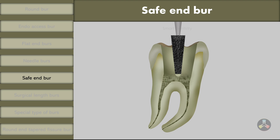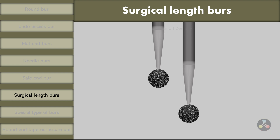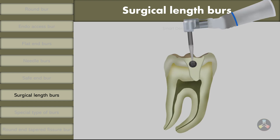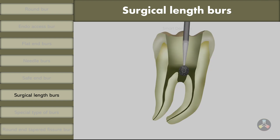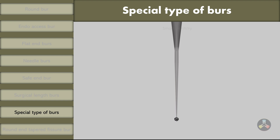The only problem with the safe-end burr occurs with calcified pulp chambers, which are quite common. In such cases, using a safe-end burr can make access preparation very difficult and may create an irregular pulpal floor, posing difficulties when negotiating the canal. It is a good burr but must be coupled with a round burr, never used alone. Most access preparation kits include a surgical length burr, which moves the handpiece head away from the occlusal surface for better vision, but these burrs are too long and can cause perforations if the operator is not highly experienced.